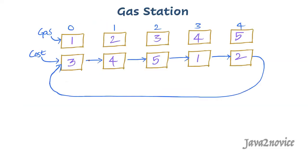Let's say that you are going on a circular trip in your car. There are N gas stations in your circular route. These are the gas stations and the amount of gas available at each station — 1 unit at station 1, 2 units at station 2, 3 units at station 3, and so on. Your car gas tank capacity is unlimited. Here are the units or cost of gas required to travel from one station to another — 3 units from here to here, 4 units from here to here, 5 units from here to here, and so on.